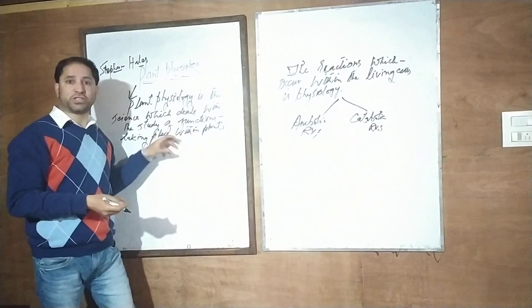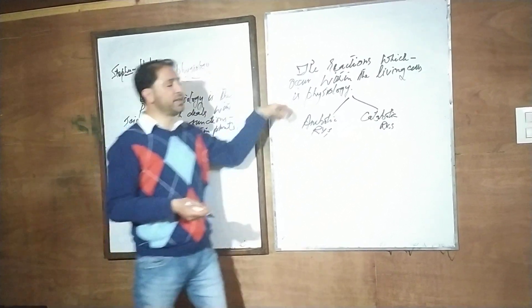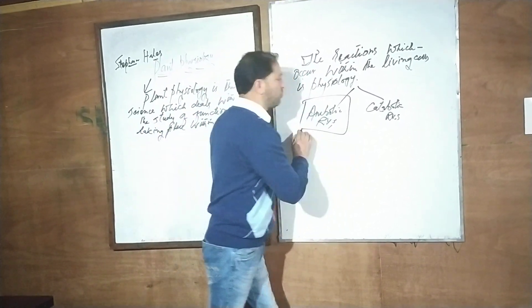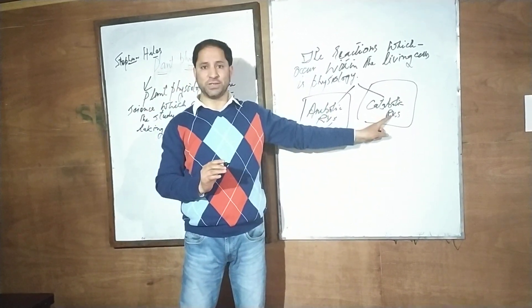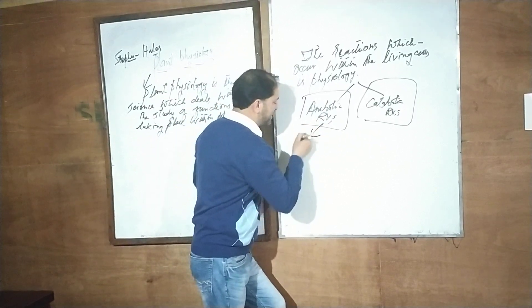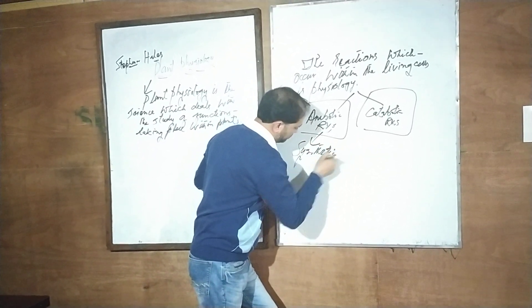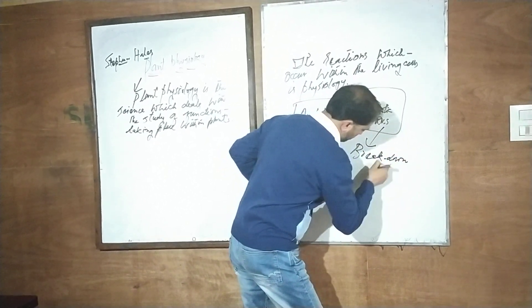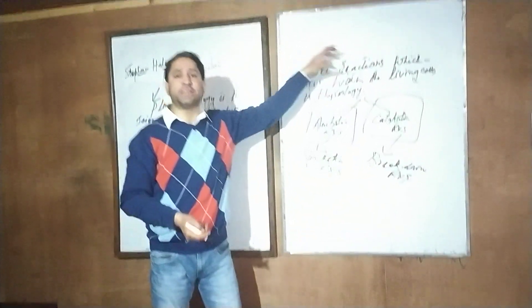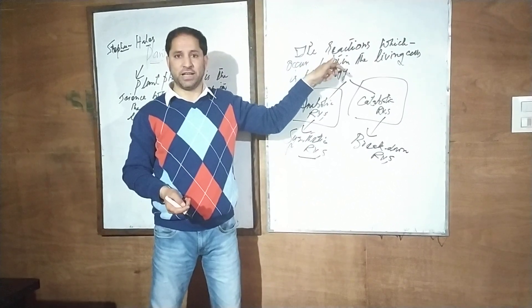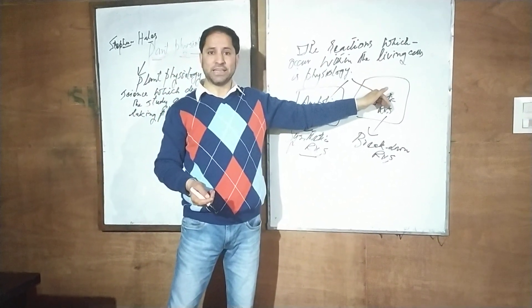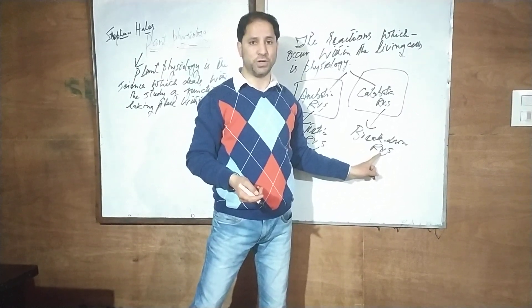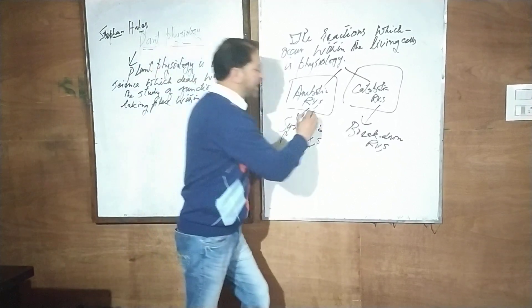The science where we study functions is physiology. The functions occurring at the cellular level are actually reactions, so the science of reactions is physiology. The reactions occurring within living cells are of two types: anabolic reactions, which are synthesis reactions, and catabolic reactions, which are breakdown reactions.